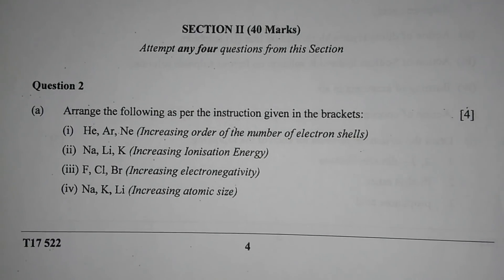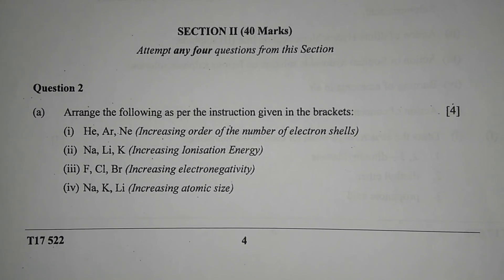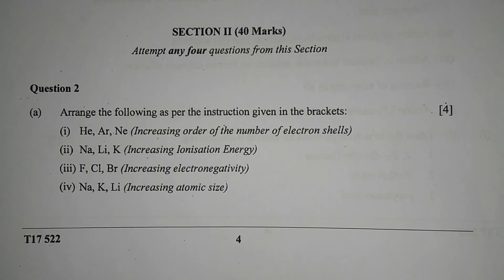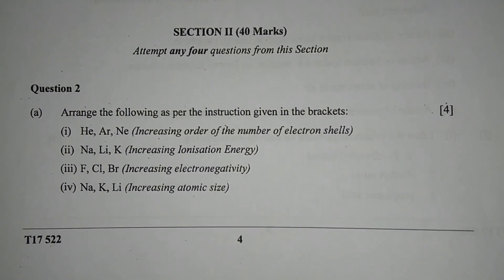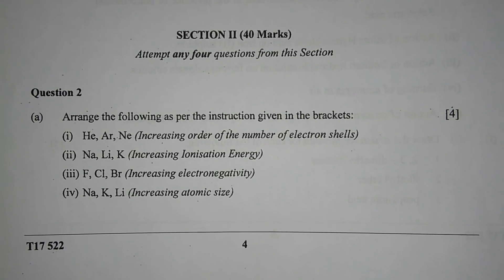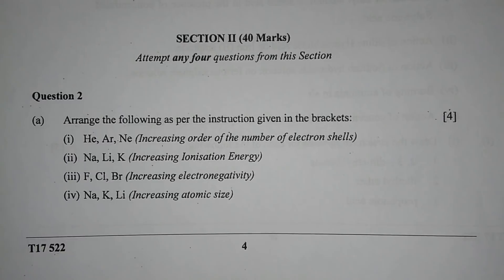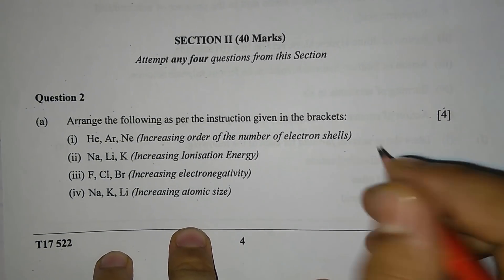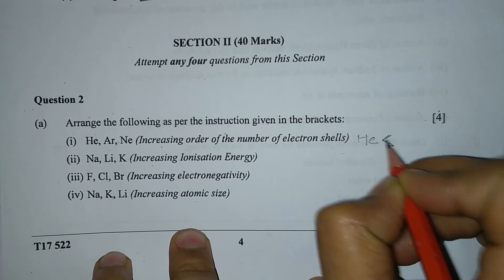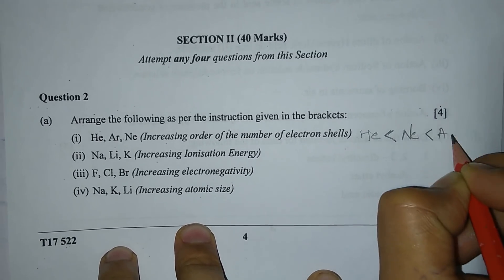We will start with Question 2a: arrange the following as per the instructions given. Number 1 — helium, argon, neon — arrange in increasing order of the number of electron shells. As you know, the number of electron shells increases on moving down the group. Helium, argon, and neon belong to the same group, so helium will have the least number of electron shells, then neon, and then argon.